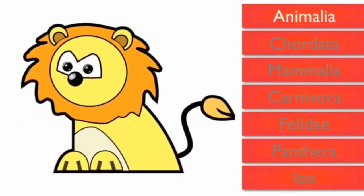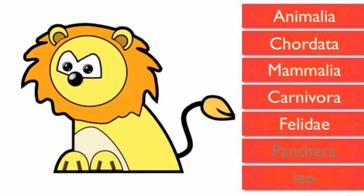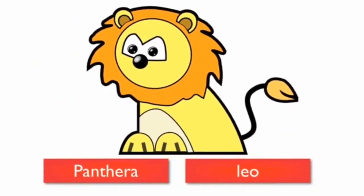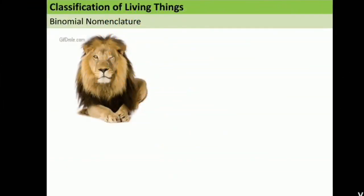We can conclude that lion is animalia, chordata because it has backbone, mammalia, carnivore, felidae, the genus is panthera, and the species is leo. So the scientific name of the lion is panthera leo.